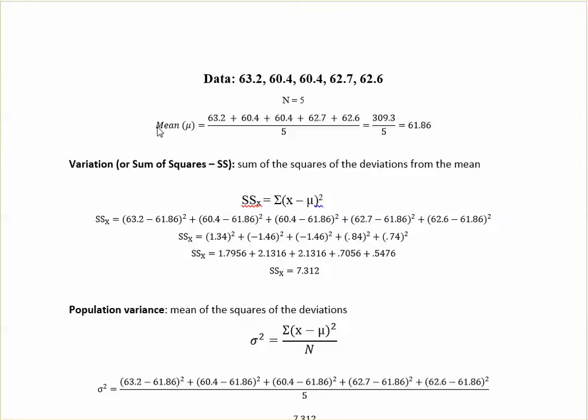The first thing that you need to find is the mean or the μ. That's what this little guy right there stands for. So you're just going to add up all of the data points and then divide by the total number. So you've got your 309.3 when you add those all up, divide by 5, and you get 61.86.